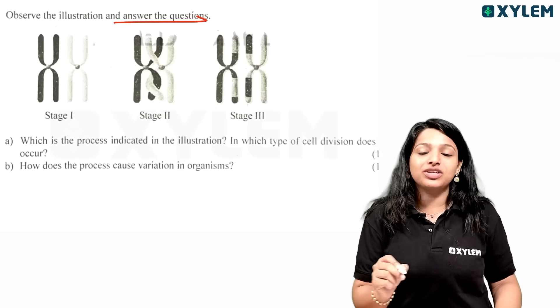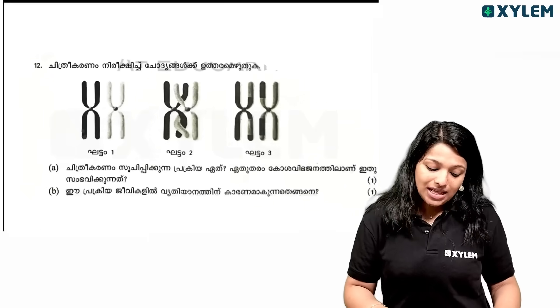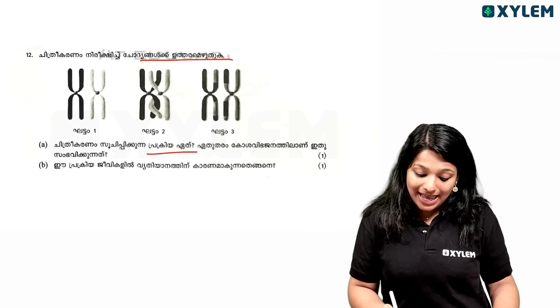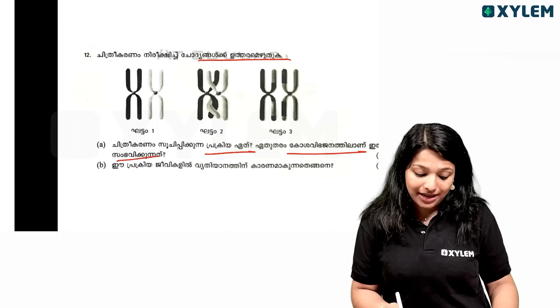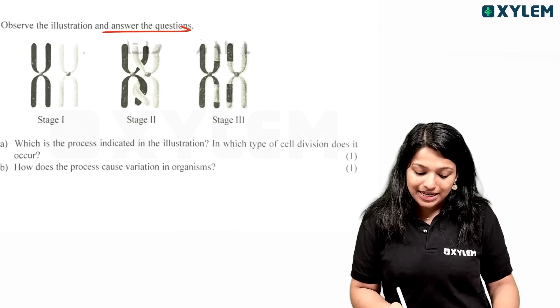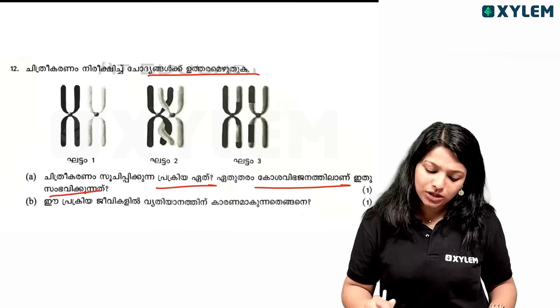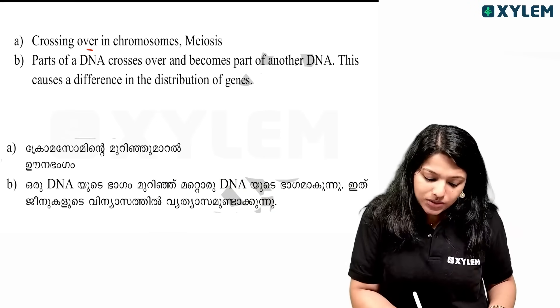Observe the illustration and answer the questions given below. Looking at the cell division process, what is it? Is it crossing over? Yes, this is a crossing over variation.